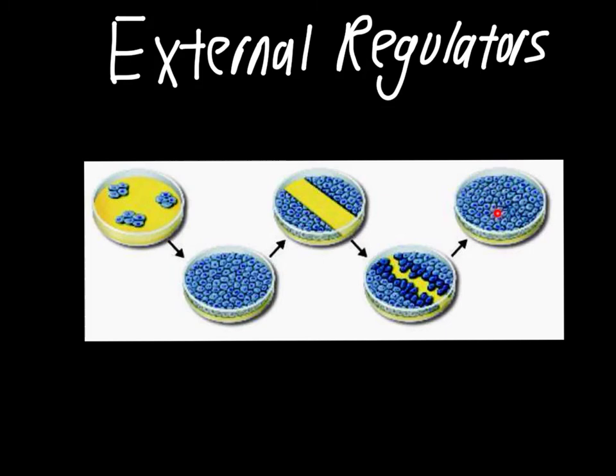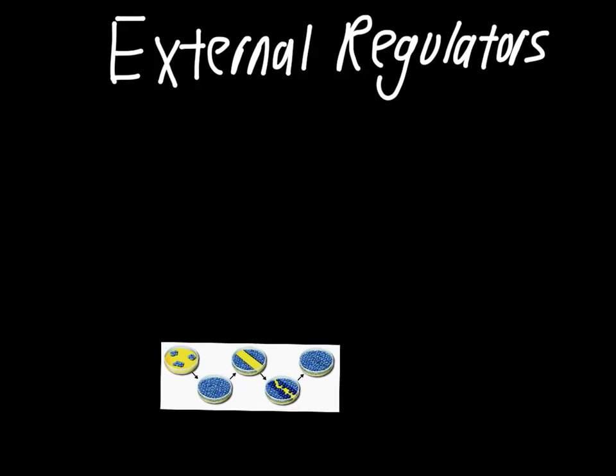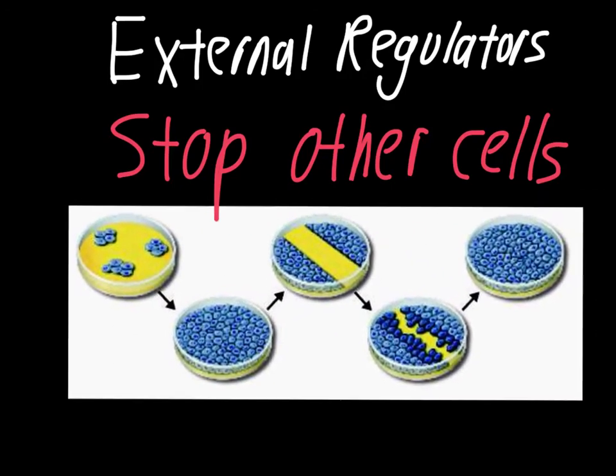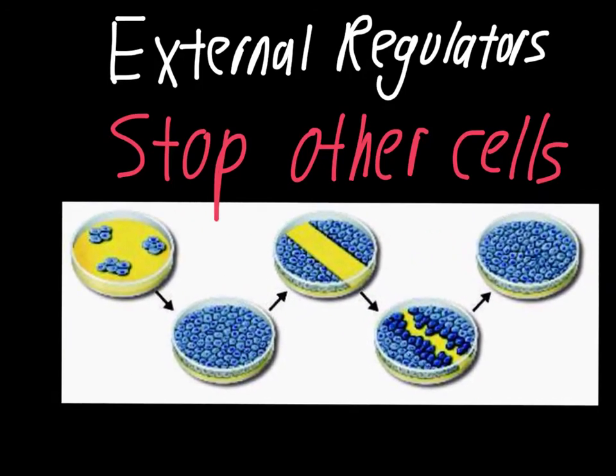So the key thing with external regulators is just the idea that it allows cells to stop dividing once they meet other cells. This is an extremely important step when it comes to preventing cell growths and things like that. You only want the cells to expand to a certain point. So keep this experiment from your textbook in mind. I think it does a very good job of representing this concept.